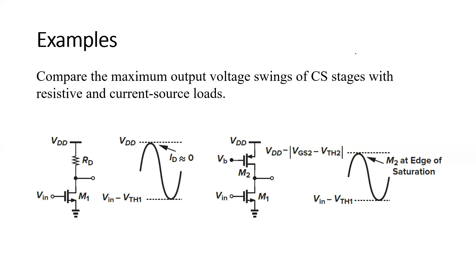First of all, I will tell you about the rail-to-rail voltage swing. The maximum source voltage used to drive this amplifier is VDD and the minimum voltage here is 0 volt. So this is the rail-to-rail voltage. If I talk about the limitation of voltages, it is nothing but 0 volt and VDD. So the rail-to-rail voltage swing is VDD minus 0.